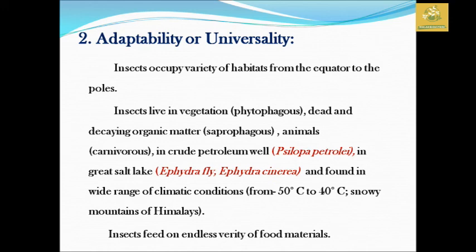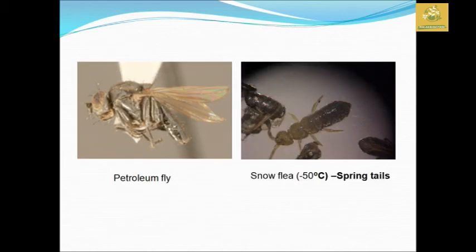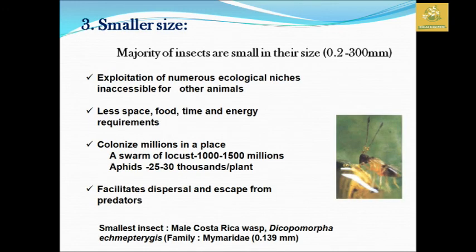There are insects such as the petroleum fly living in snow fields. If you talk about this, there are spring tails found in the Himalayas snow fields — demonstrating how widely distributed insects can be across extreme habitats.